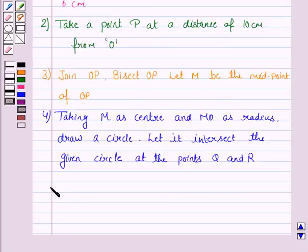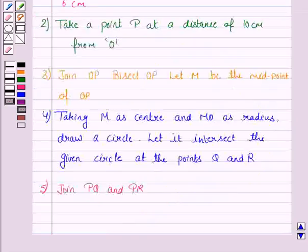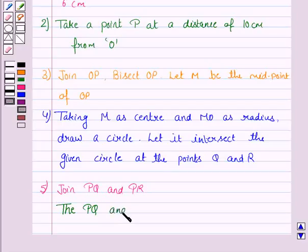Now, the next step is join PQ and PR. So, we have joined PQ and PR, then PQ and PR are the required two tangents.